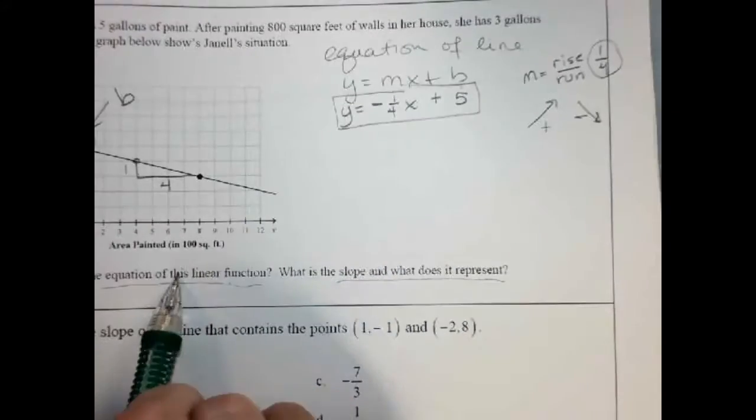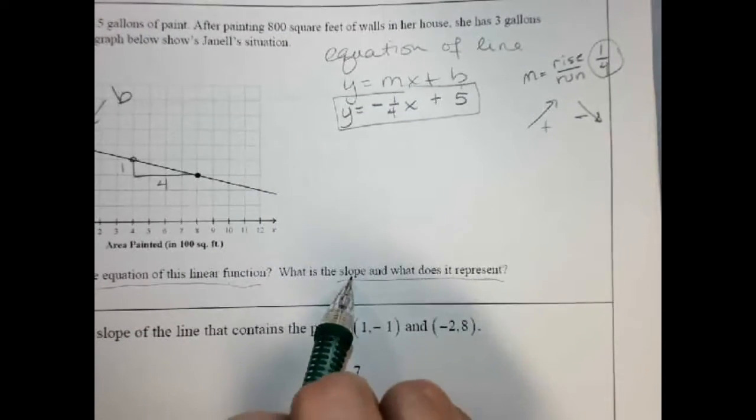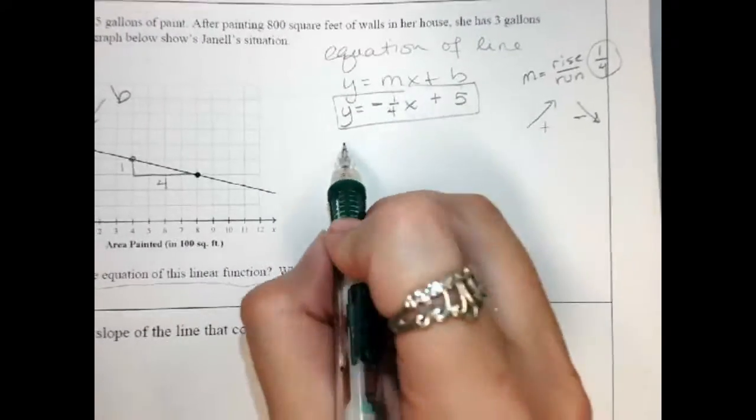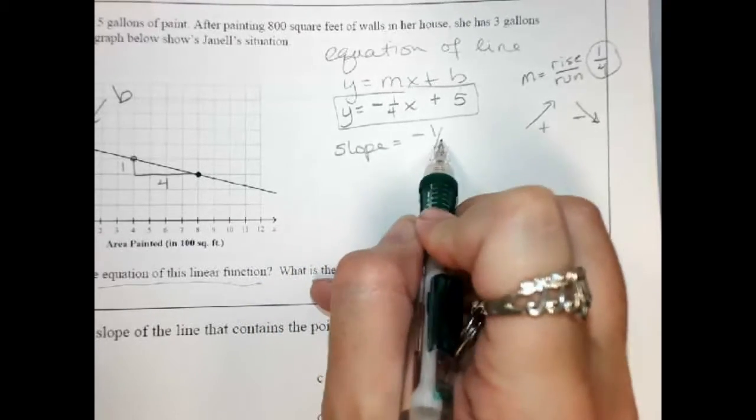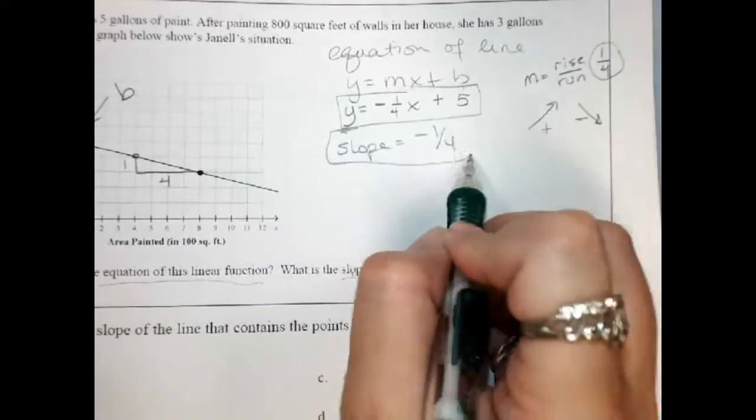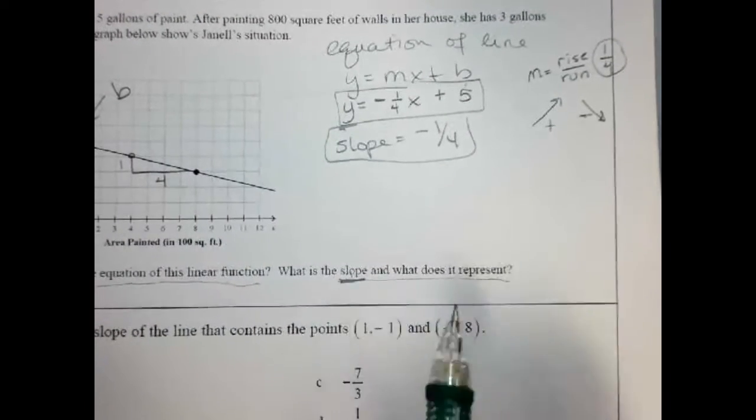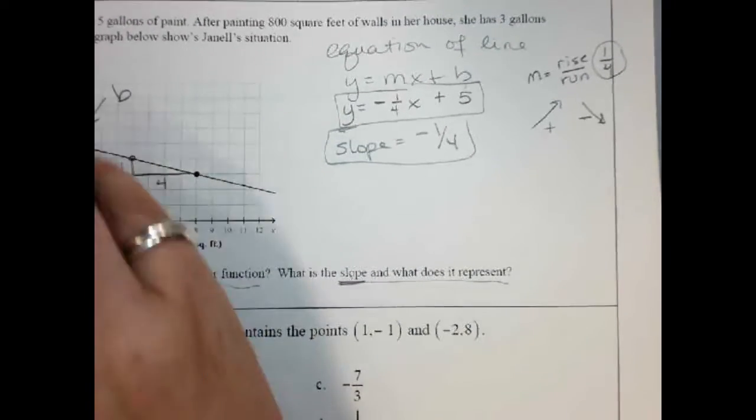That's this part here. Then it says, what is the slope? Well, we just found the slope. It's slope is negative one over four. There it is. That's what it asked me here. And what does it represent? So now let's go back over here and look at what we're talking about.